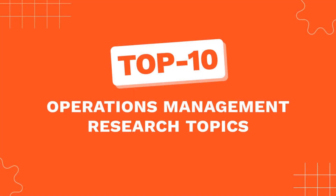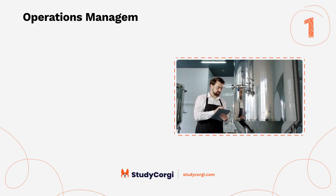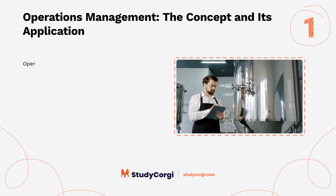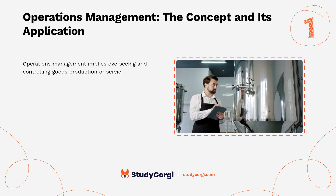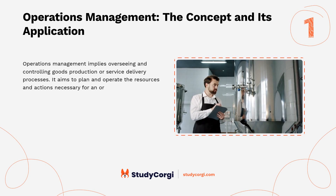Top 10 Operations Management Research Topics. Operations management implies overseeing and controlling goods production or service delivery processes. It aims to plan and operate the resources and actions necessary for an organization's effectiveness.